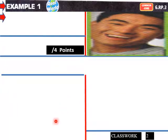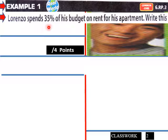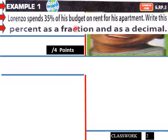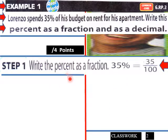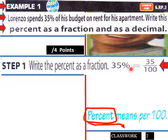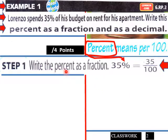Example one: Lorenzo spends 35 percent of his budget on rent for his apartment. Write this percent as a fraction and as a decimal. Step one, write the percent as a fraction. So 35% equals 35 over 100. Percent means per 100, so it'll be 35 per 100.